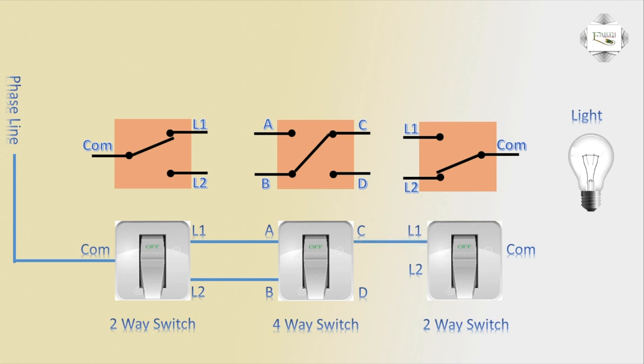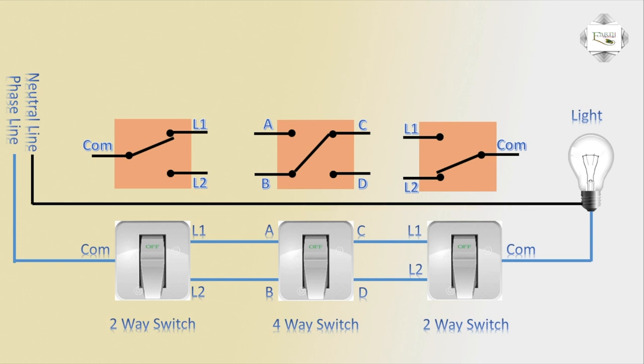Line 1 is short to terminal d, and line 2 is short from the 4-way switch. The common outgoing connects to the light, and the neutral is the common return. This completes the 3-switch wiring, with the 1st and last switches being 2-way switches.